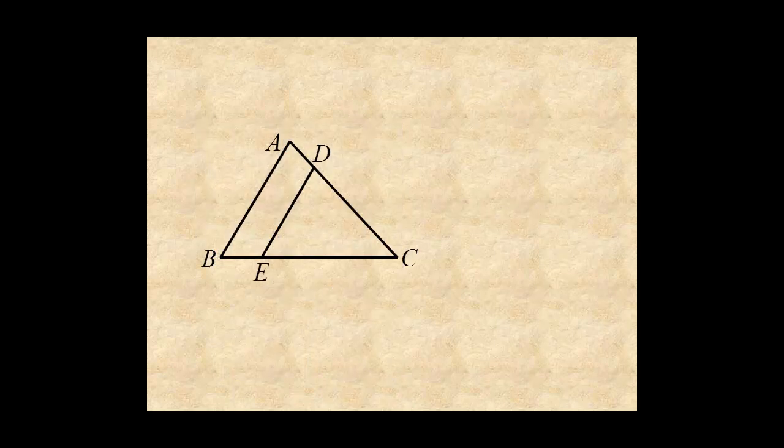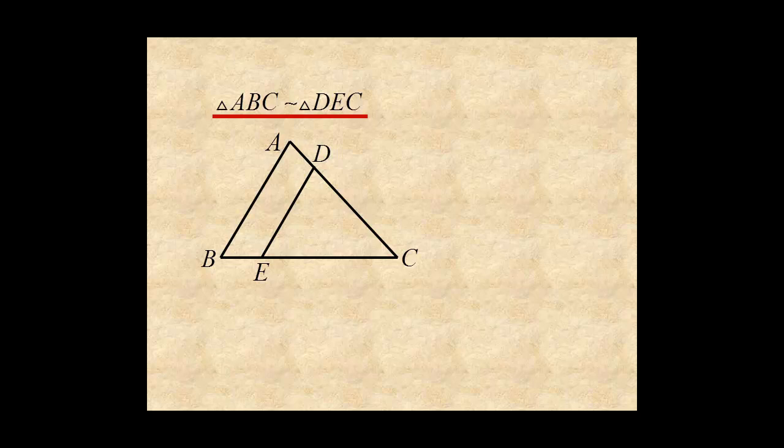You can use proportions to find unknown lengths in similar figures. In this diagram, triangle ABC is similar to DEC. So the ratio of AB over DE equals the ratio of BC over EC.